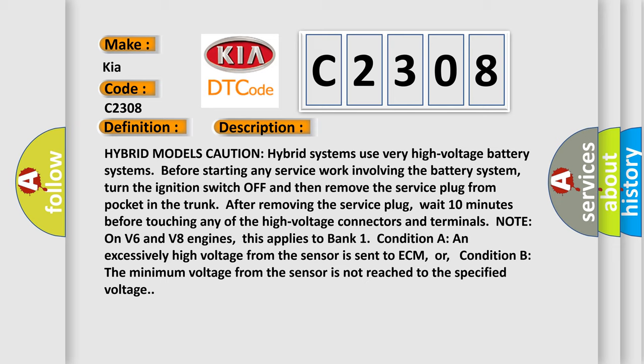Condition A: an excessively high voltage from the sensor is sent to ECM, or Condition B: the minimum voltage from the sensor is not reached to the specified voltage.